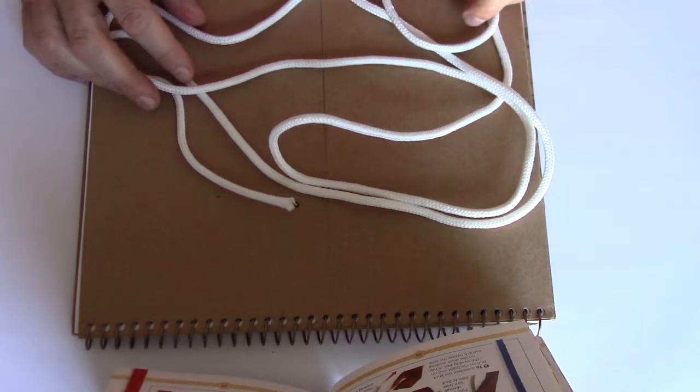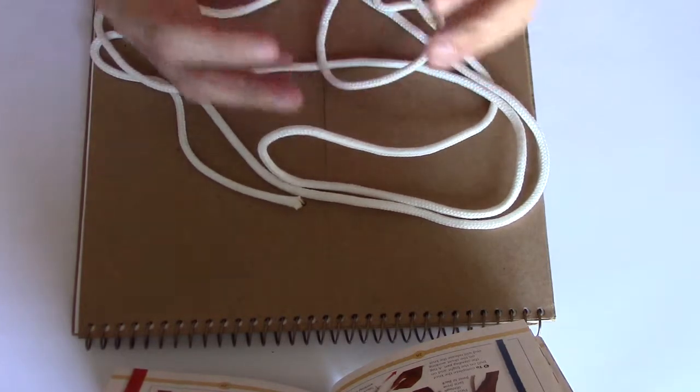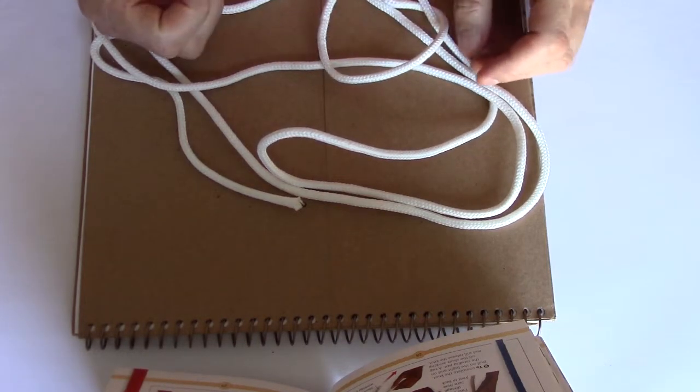Overhand knots are one of the simplest of all knots and they're used quite a bit for just about any activity because they form a very tight knot that can't easily be taken apart. So it's a very secure knot. Just using a piece of rope, that's all you need.